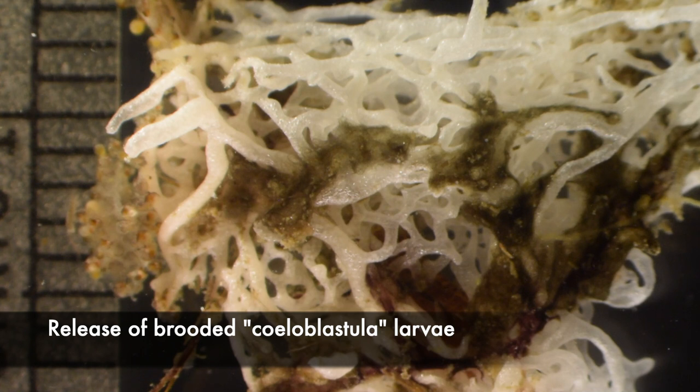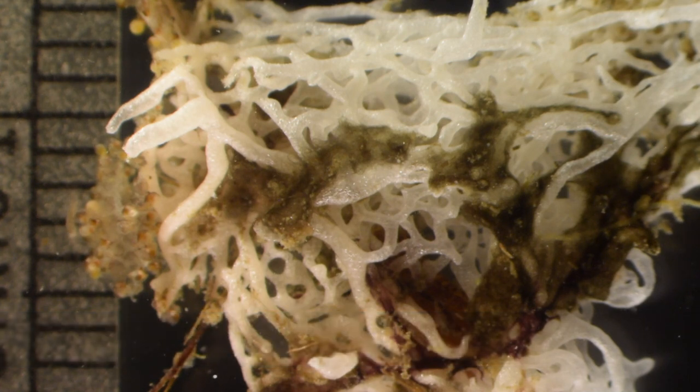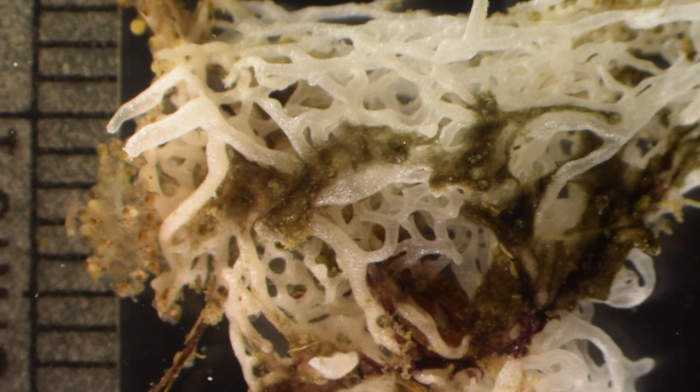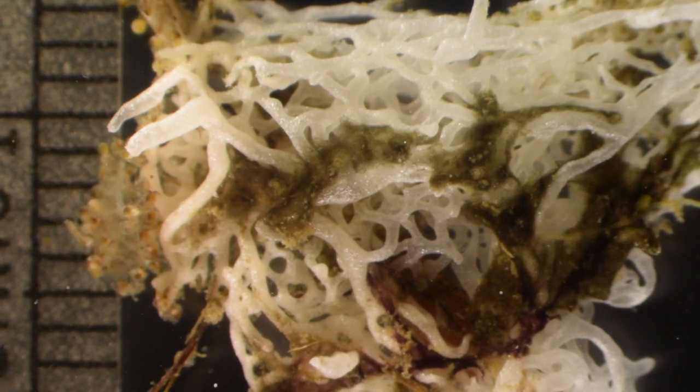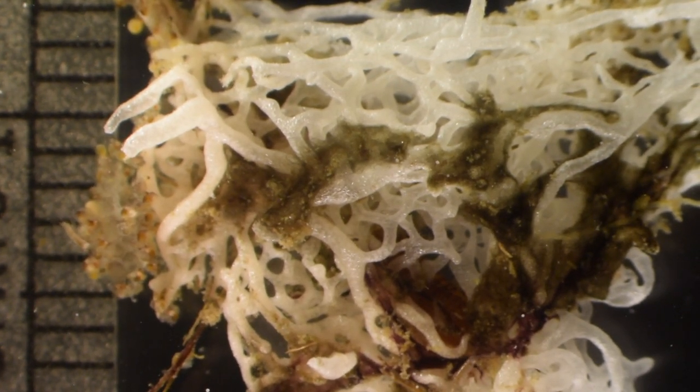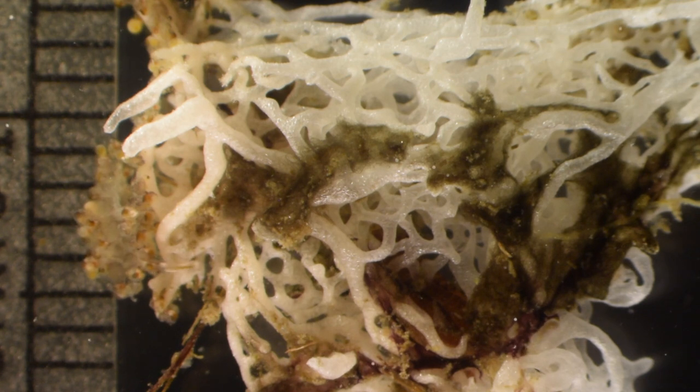While looking at this sponge with a dissection microscope, I noticed these small objects swimming around and I realized I was seeing something I'd never seen before, Leucosolenia releasing its brooded larvae. These are called Coeloblastula larvae, I think, although there are several other names for them in the literature as well.